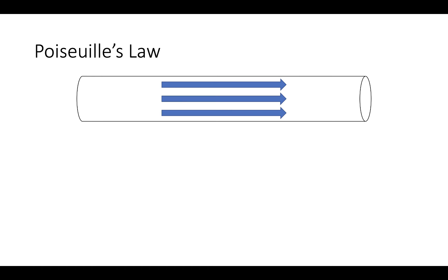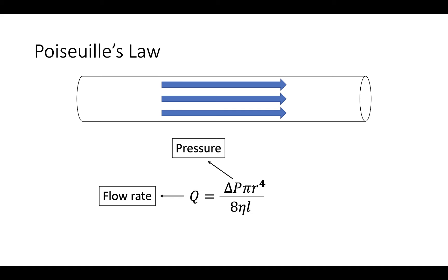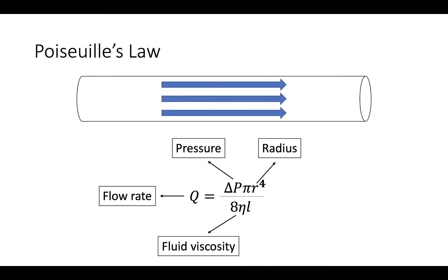Poiseuille's law describes laminar flow through straight, circular tubes. In the equation for Poiseuille's law, Q equals flow rate, P equals pressure, R equals radius, N equals fluid viscosity, and L is the length of the tubing. Note that radius is in the numerator and length of tubing is in the denominator.